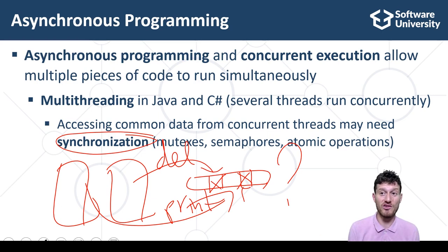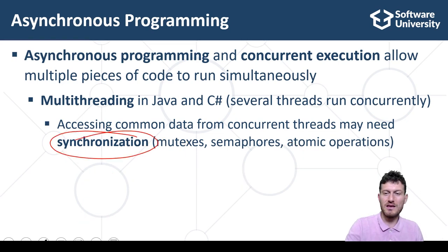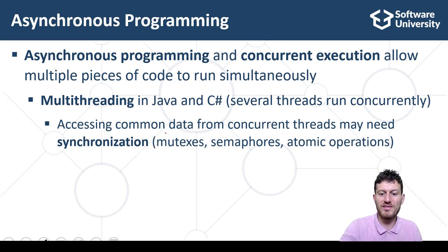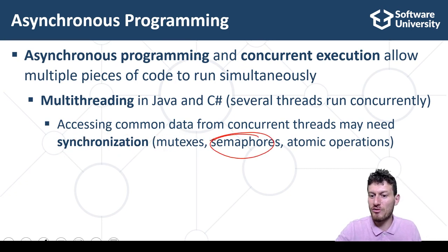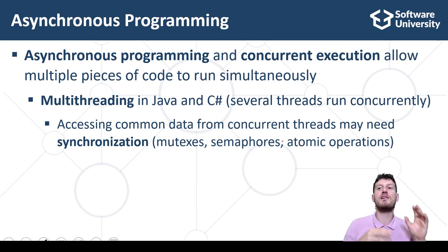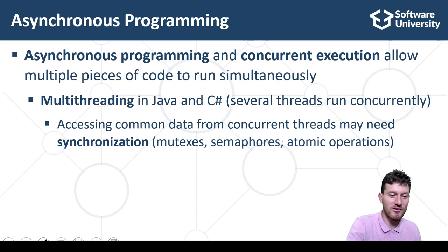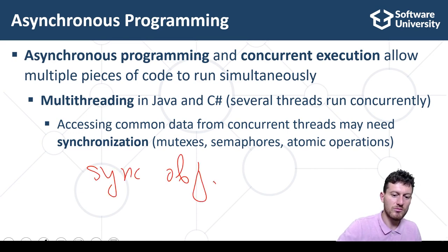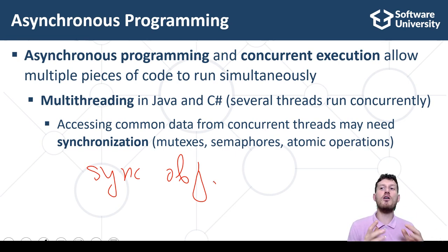To solve these challenges, developers use thread synchronization. Critical sections, locks, mutexes, semaphores, signals, atomic operations, and monitors are examples of synchronization objects used in multi-threading to resolve conflicts when accessing shared data from several threads.